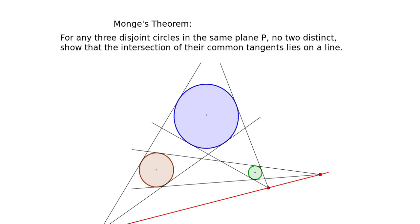And no two, or I think I meant to say congruent here, so congruent, show that the intersection of their common tangents lies on a line, or I should say intersections.